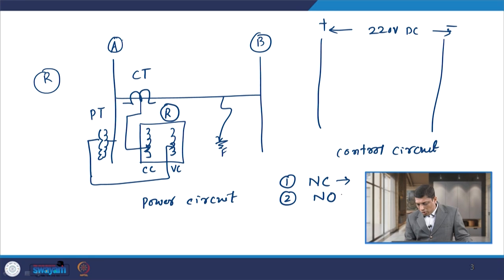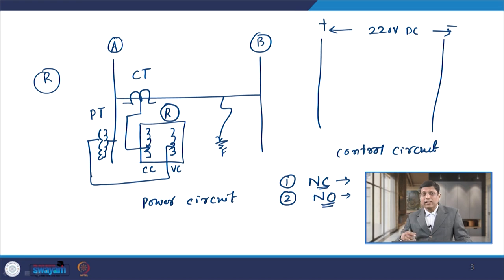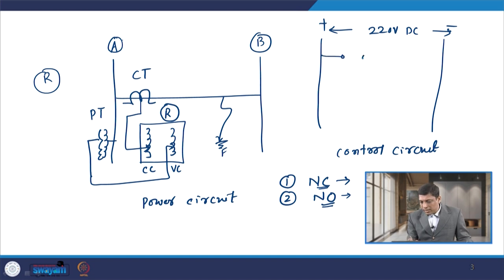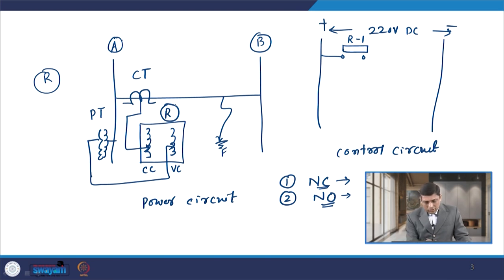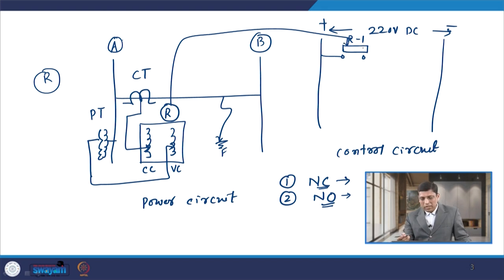A normally closed contact remains closed when the relay coil is de-energized, whereas a normally open contact remains open when the relay coil is de-energized. If we consider relay R with a normally open contact, that contact is called R1. Whenever any fault occurs on the line, the coil of the relay is energized and it gives signal to contact R1. Since this contact is normally open, whenever the relay coil is energized, this contact closes and gives further signal to the auxiliary relay.